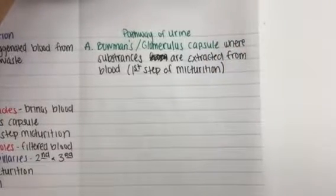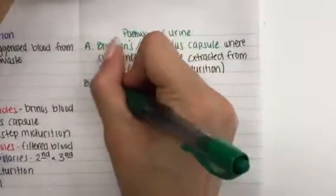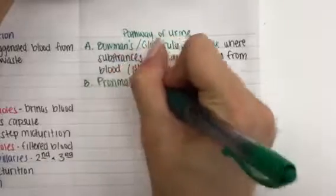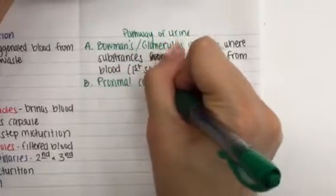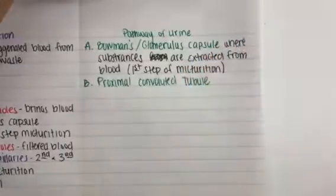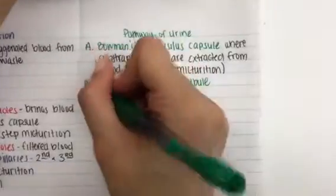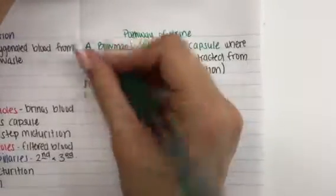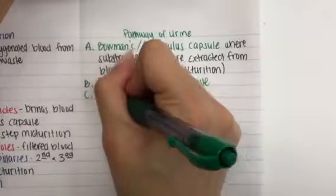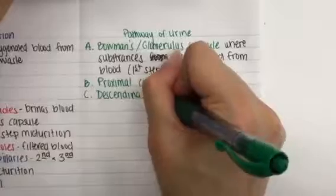And this is actually the first step in forming urine. So I'm going to write first step of micturition. After the substances are removed from the blood, that urine will now drain out of the Bowman's capsule through to the letter B, which is the proximal convoluted tubule. The proximal convoluted tubule will zigzag back and forth. And it'll have a portion where it goes downward into the loop of Henle. Do the descending limb.